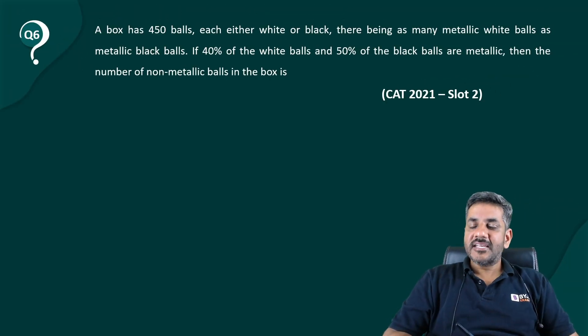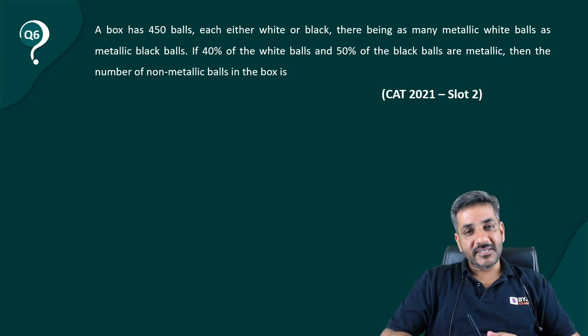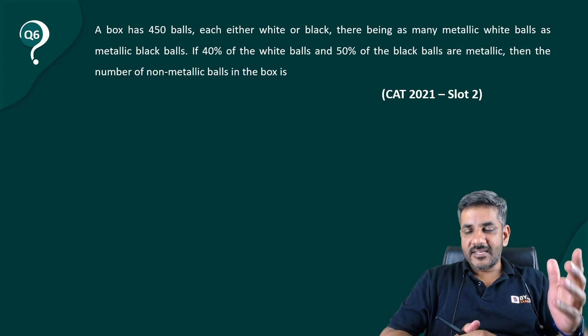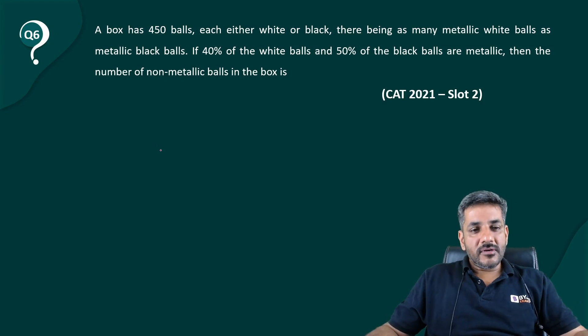Hi, so here we have the sixth question of the series and this time it is from CAT 2021 Slot 2. Let's have a look at this. A box has 450 balls, each either white or black, there being